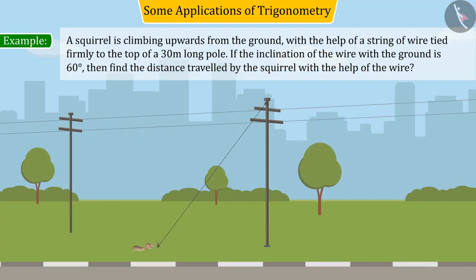A squirrel is climbing upwards from the ground with the help of a string of wire tied firmly to the top of a 30 meter long pole. If the inclination of the wire with the ground is 60 degrees, then find the distance travelled by the squirrel with the help of the wire.